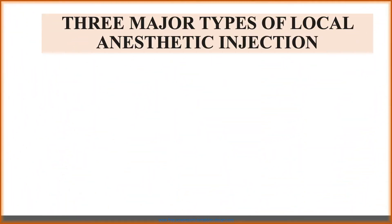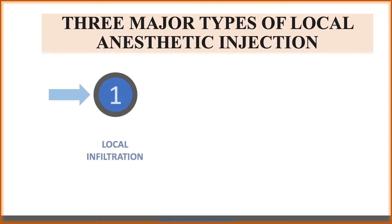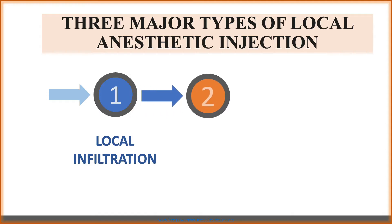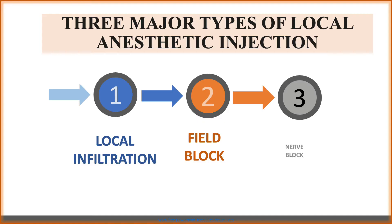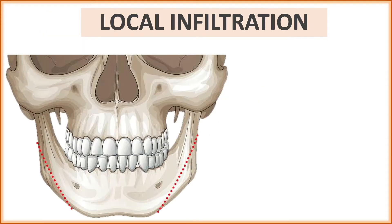We have three major types of local anesthetic injections. The first one is local infiltration — meaning we are giving the injection locally. The second one is the field block, and the third one is the nerve block.